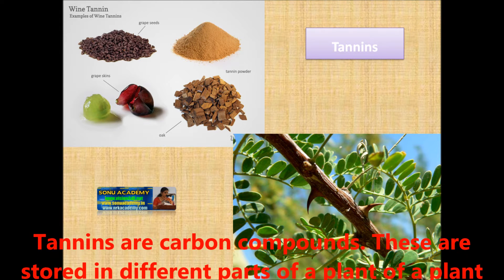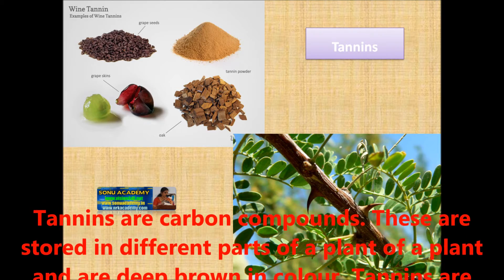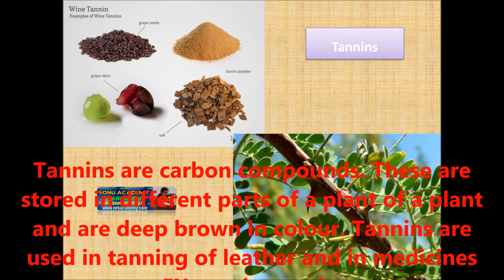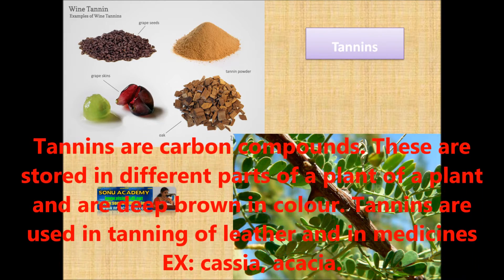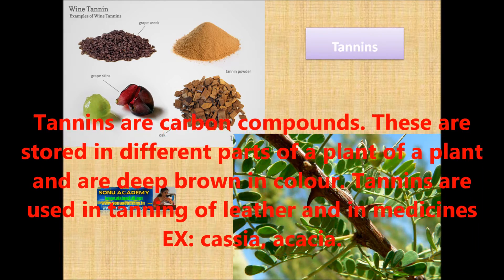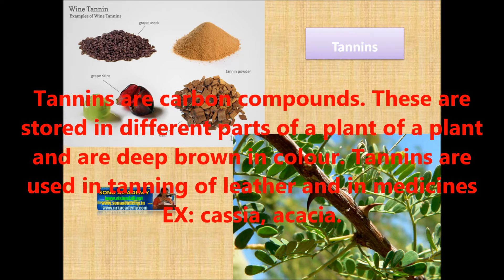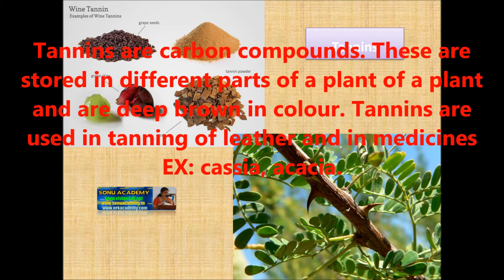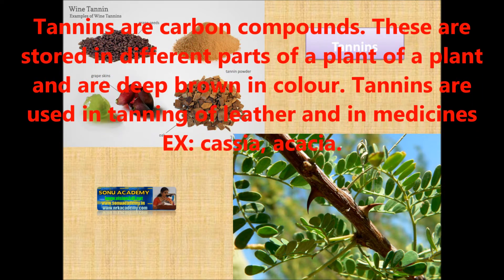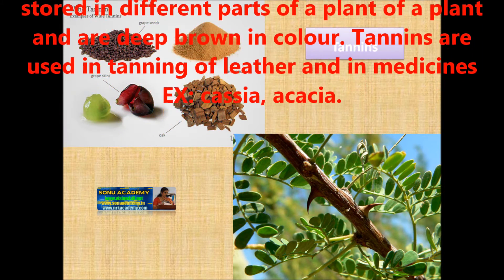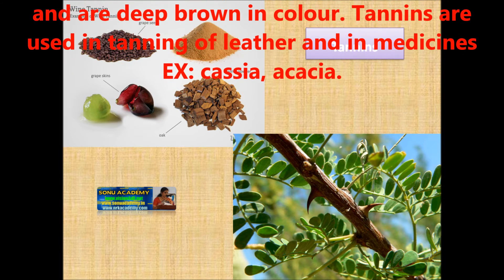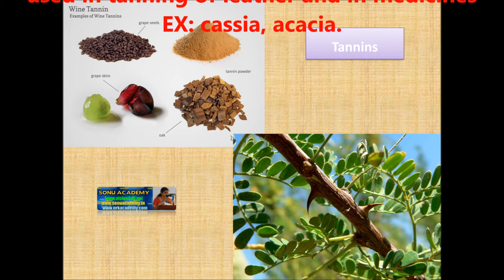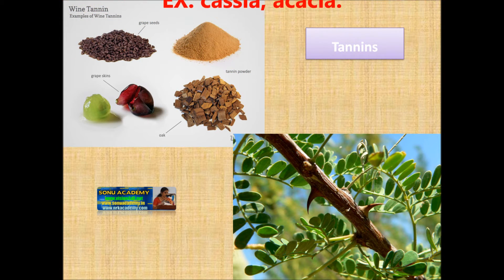Tannins are carbon compounds. These are stored in different parts of a plant and are deep brown in color. Tannins are used in the tanning of leather and in medicines. Examples include cassia and acacia.